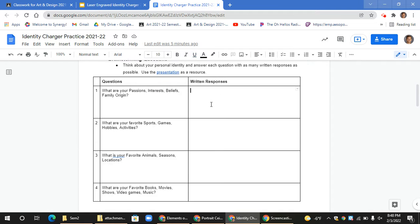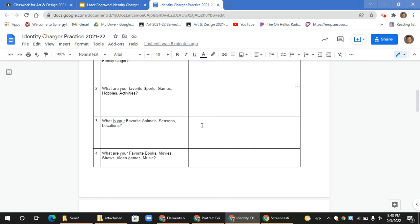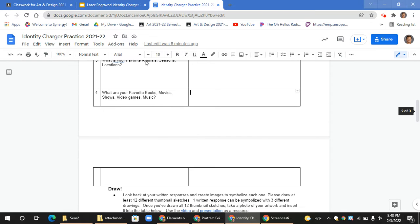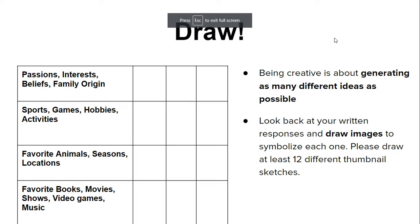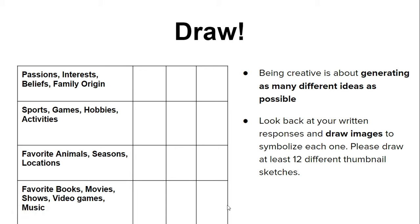Be sure to write as many written responses as you can for the following four questions in your practice document. Once you've written down some different words, you're next going to be drawing the things that you wrote down. Notice in this table that after passions, interests, beliefs, and family origin, there are three squares — each indicating you should draw three different images for each idea. You want to include sports, games, hobbies, and activities for four different examples, three for favorite animals, seasons, and locations, and three for favorite books, movies, shows, video games, and music. Draw as many ideas as you can to come to your best idea.